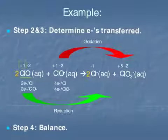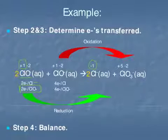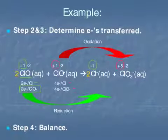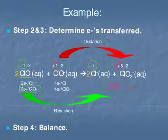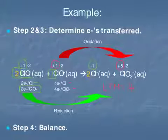The left hypochlorite went from +1 to −1, gaining 2 electrons per chlorine atom. With only 1 chlorine per hypochlorite, it gained 2 electrons per hypochlorite. The other hypochlorite went from +1 to +5, losing 4 electrons per chlorine atom — and with 1 chlorine per hypochlorite, it lost 4 electrons per hypochlorite. The lowest common multiple between 2 and 4 is 4. We need a coefficient of 2 in front of the first hypochlorite to gain 4 total electrons, and a coefficient of 1 in front of the second hypochlorite to lose 4 electrons.